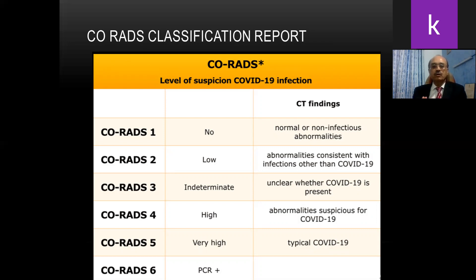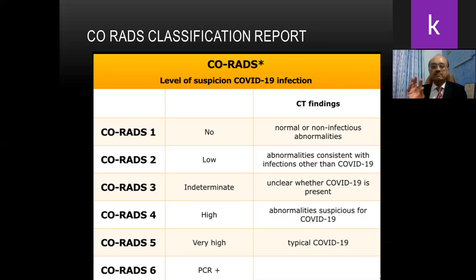CORADS 2 is where there is a low suspicion of COVID-19 infection and the abnormalities seen on the CT scan are consistent with infections other than COVID-19. CORADS 3 is indeterminate — where you are unclear or unsure whether COVID-19 is present or not. CORADS 4 gives a high suspicion of COVID-19 with abnormalities that give a highly suspicious diagnosis. CORADS 5 is described when you have a very high chance with typical COVID-19 CT pictures, and when CORADS 5 is associated with a positive PCR test, it is known as CORADS 6.